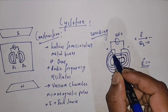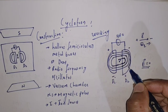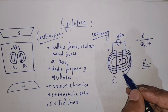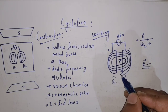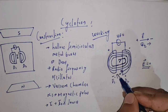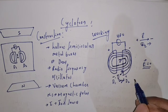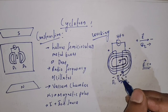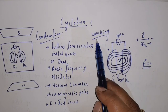Every time the process repeats, the radius and velocity keep increasing. Finally, the positive ion attains a very high velocity and is made to be incident on the target. This is all about the working of the cyclotron.